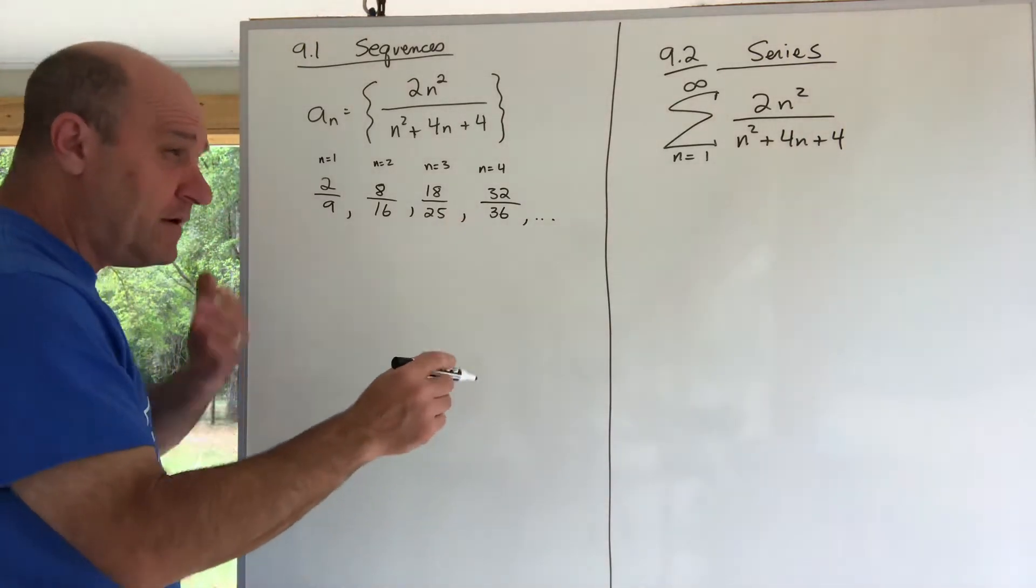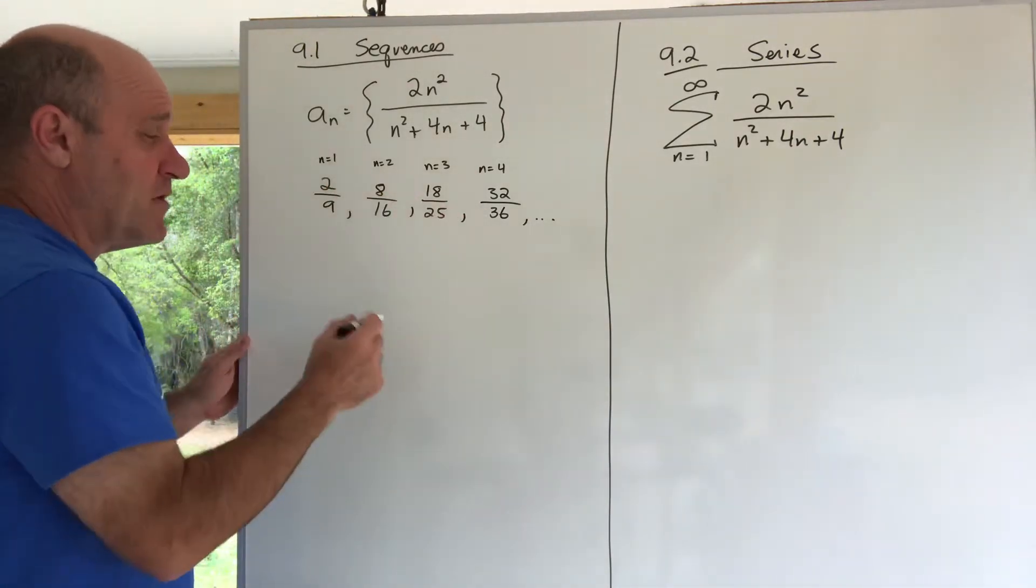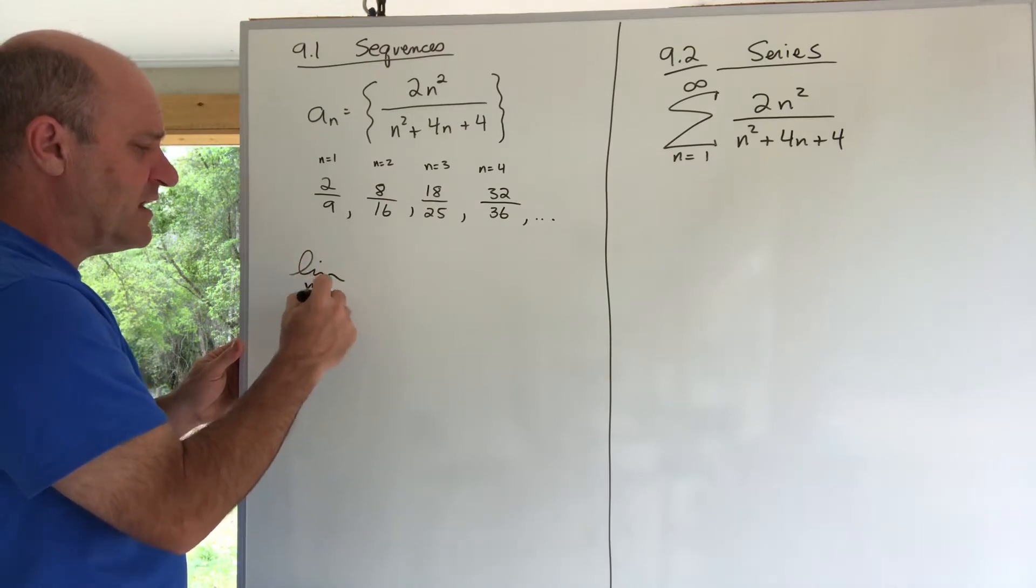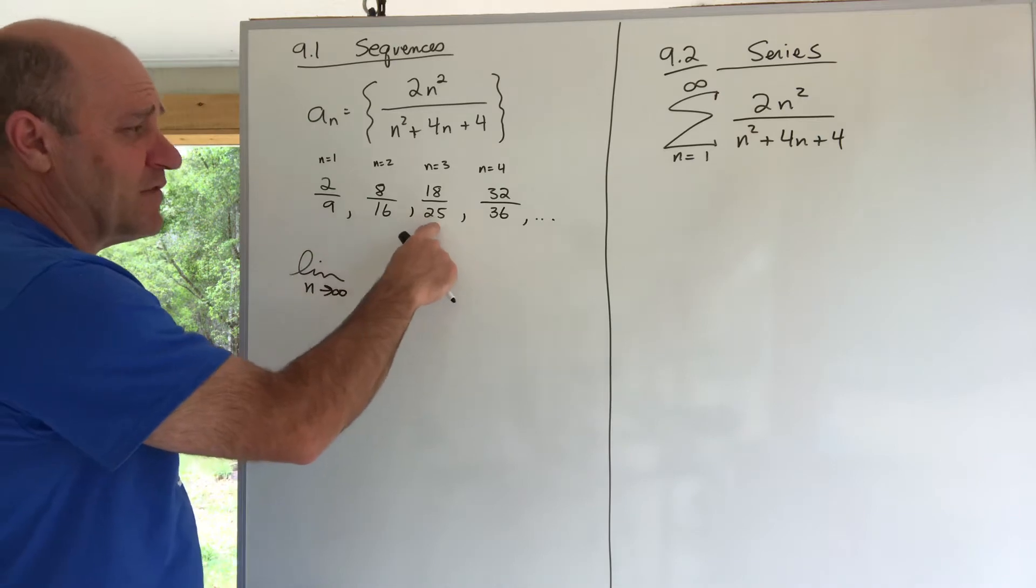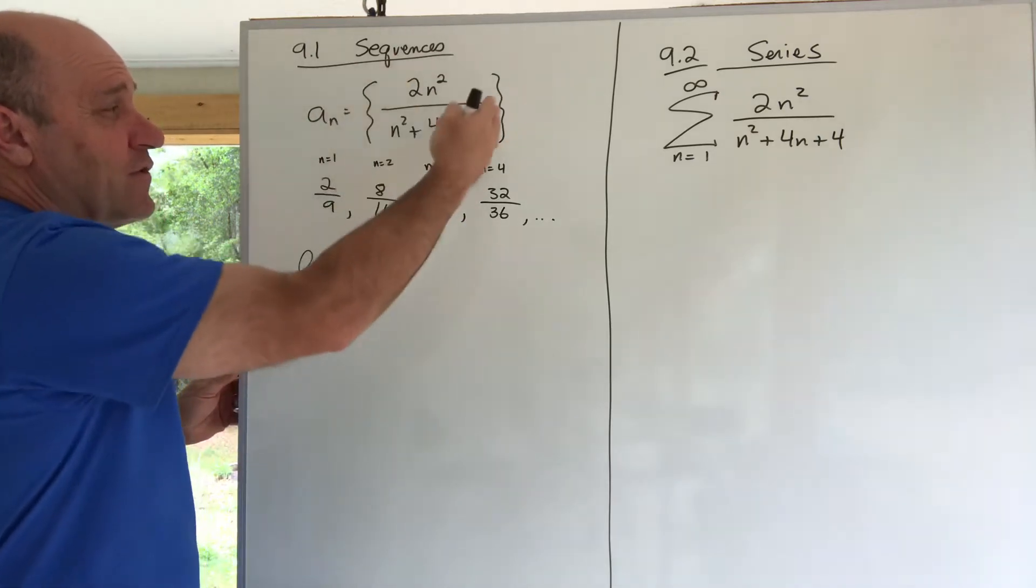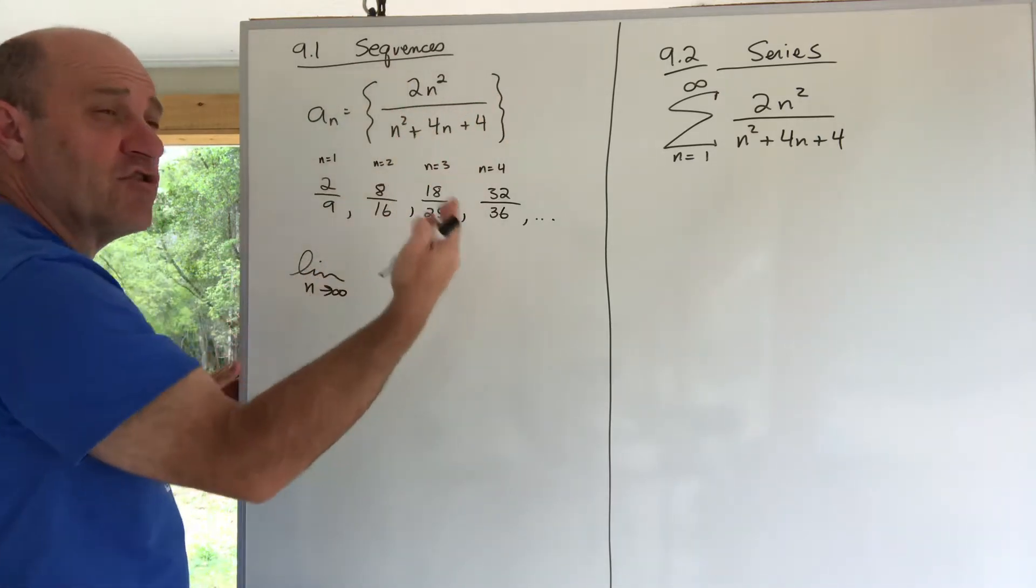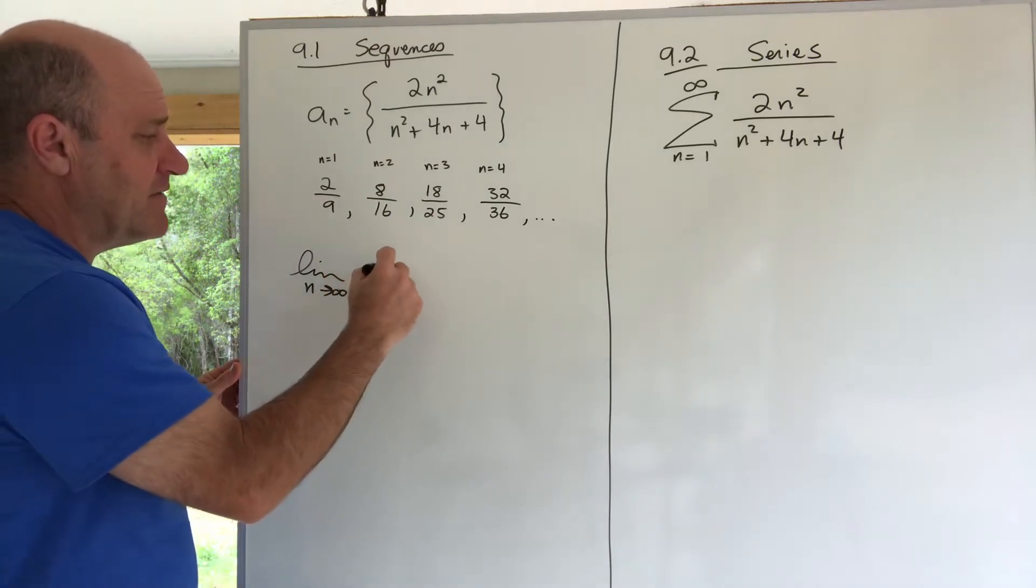The way we learned to tell what a sequence might be approaching is you take the limit as n goes to infinity of the nth term. That's the first term, the second term, the third term - this is the nth term. The sequence was defined by the nth term, so I take the limit of the nth term as n goes to infinity.